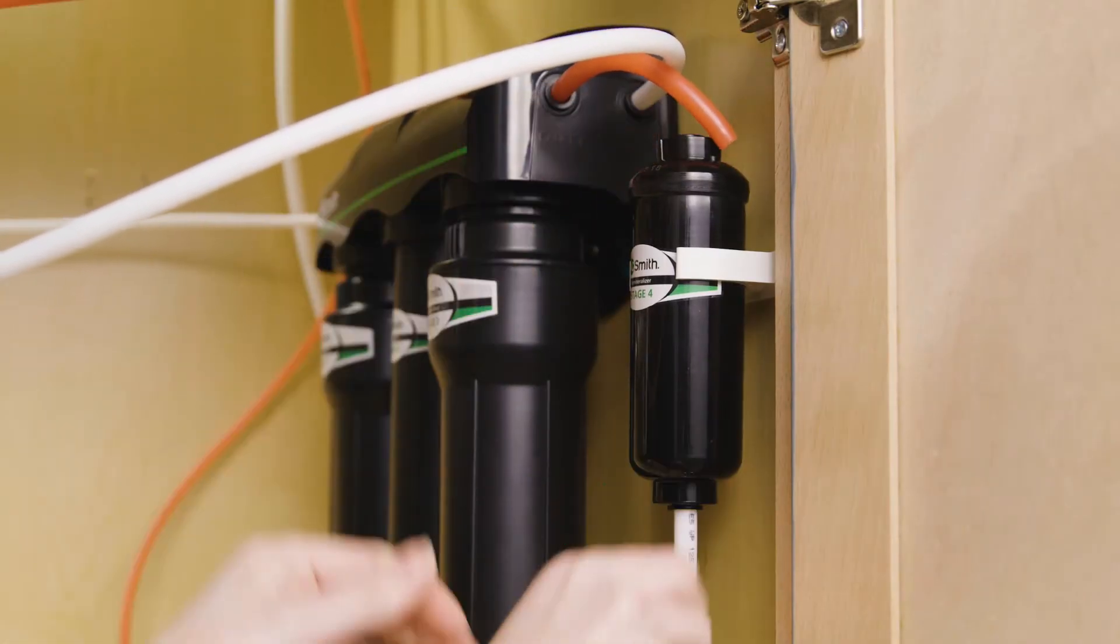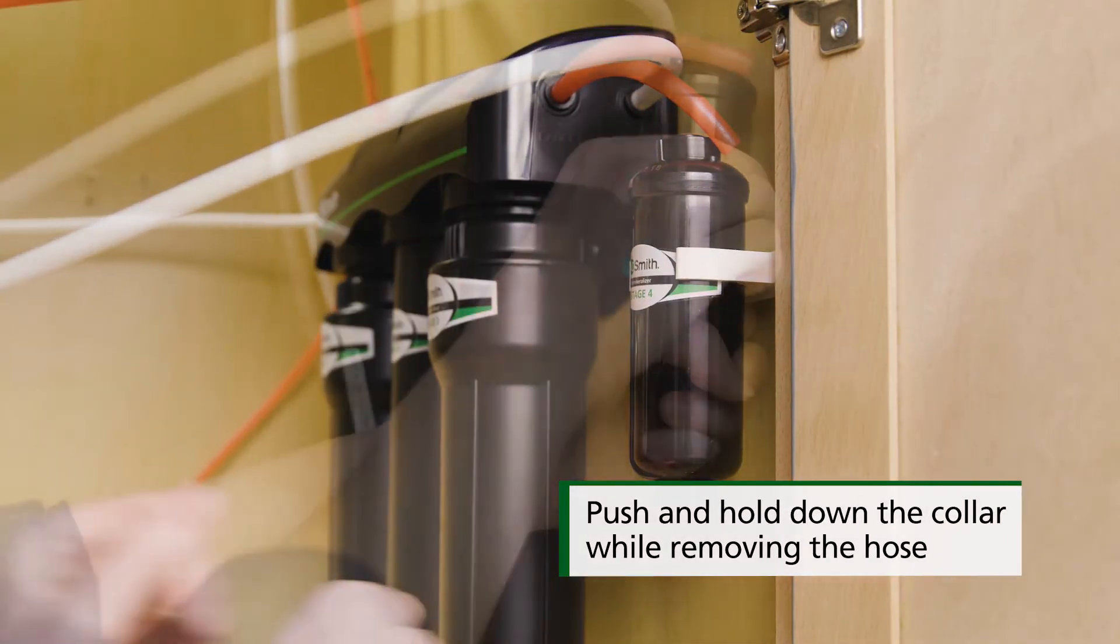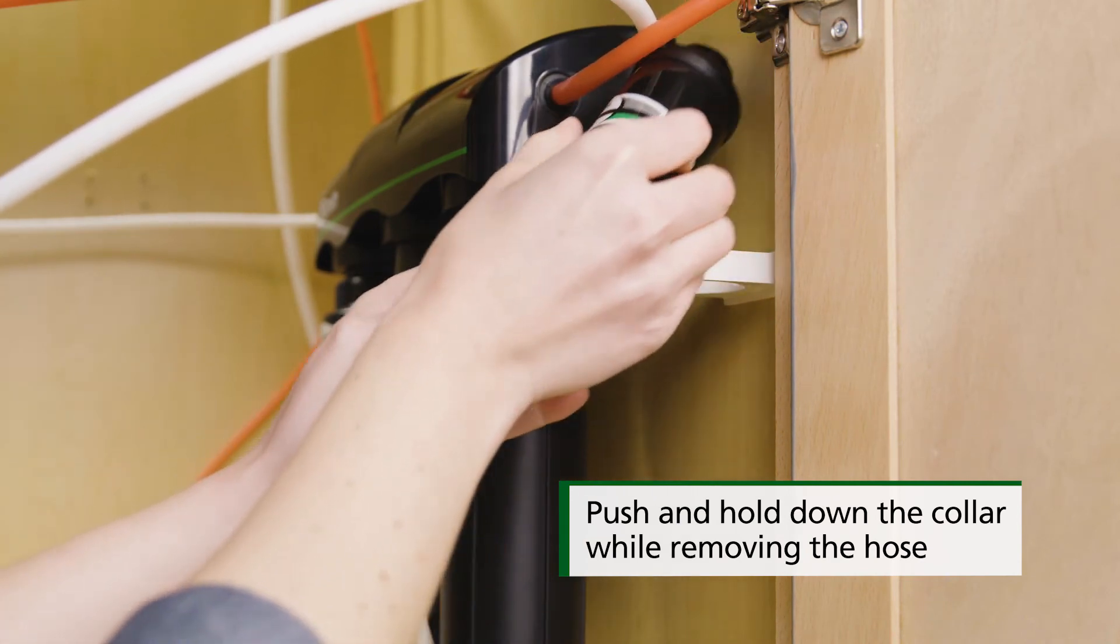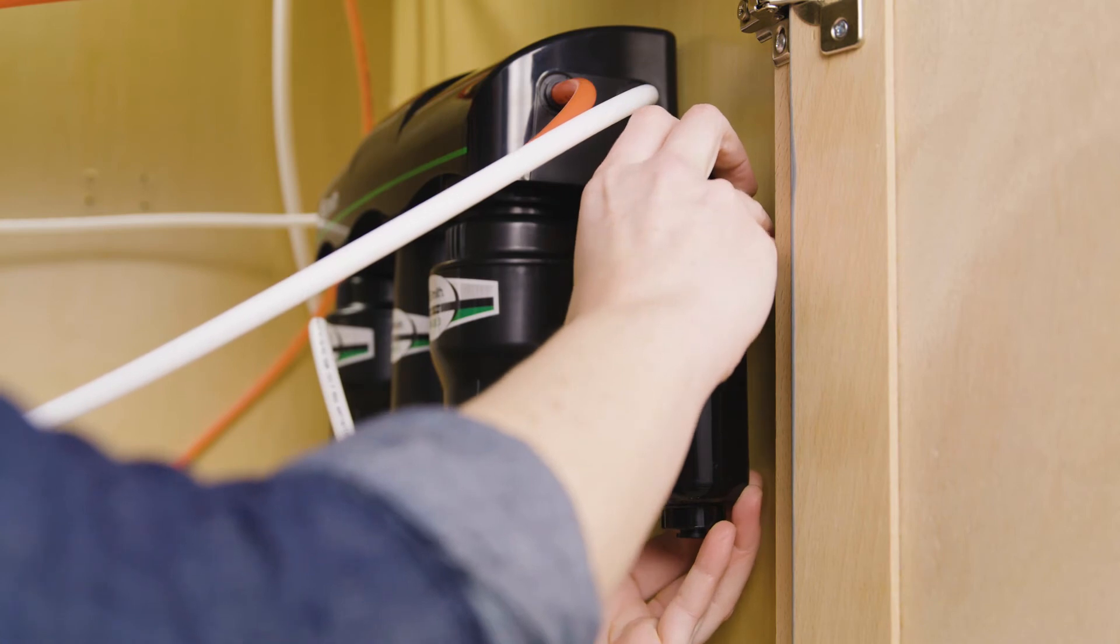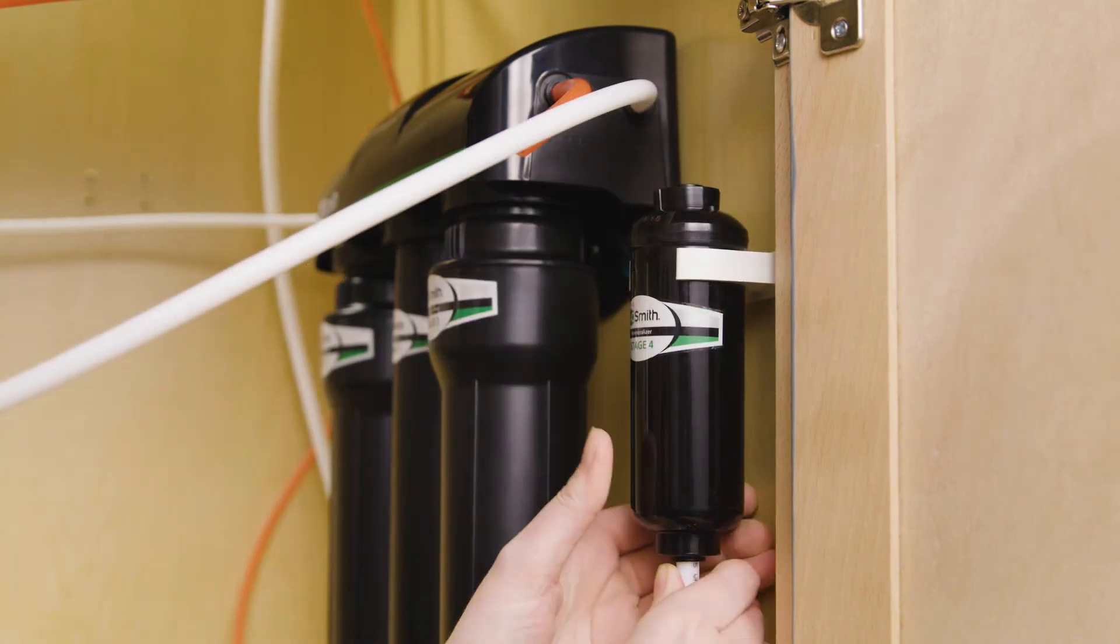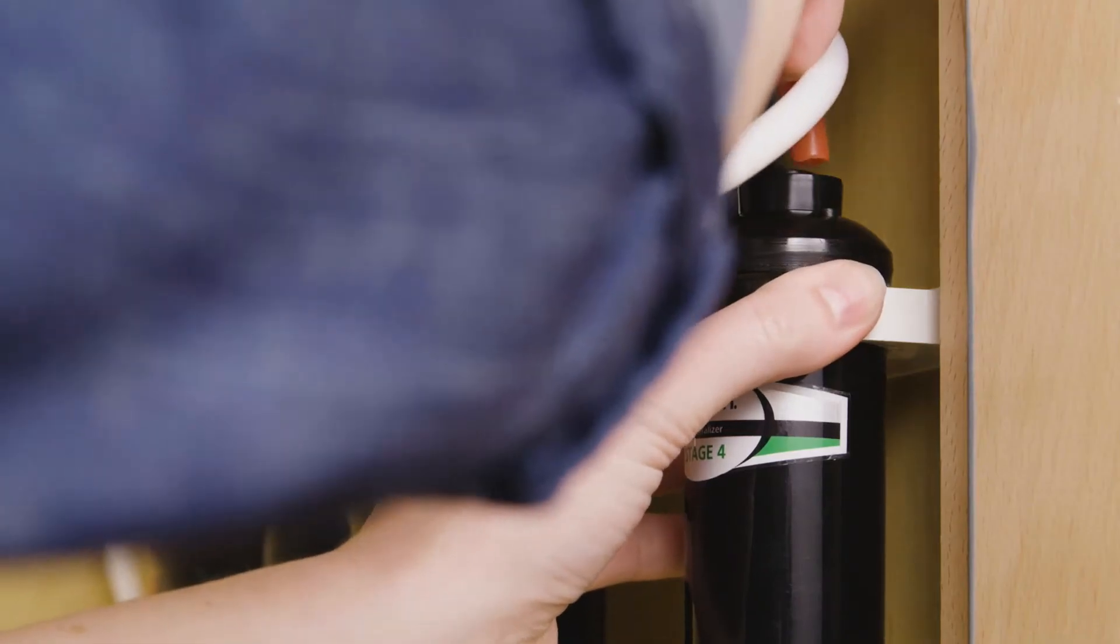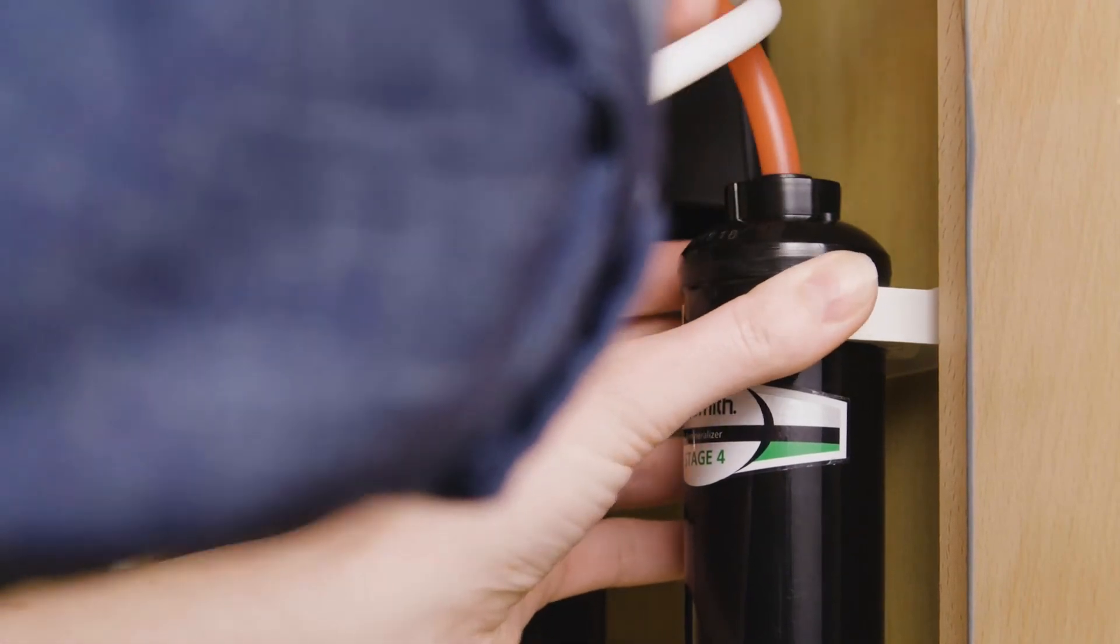Disconnect the 3⁄8 inch hose from the inlet and outlet of the remineralizer. Discard the old remineralizer. Insert the new remineralizer. Connect the white hose into the outlet of the new remineralizer. Connect the red hose back to the new remineralizer.